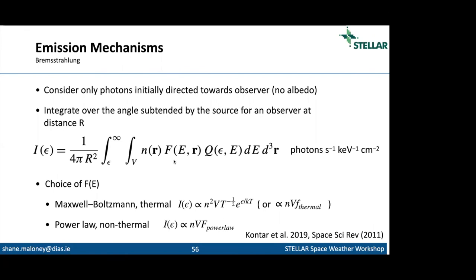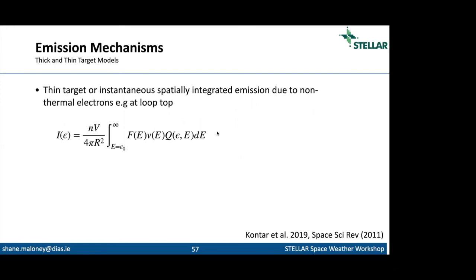One of the first approaches was the thin target model — taking this equation, integrating it spatially, and looking at a single instant in time. This gives an equation where, assuming an electron distribution, we can calculate the expected photon intensity. Crucially there's a dependence on N — the plasma density — taken inside the integral over the spatial domain. This is only really valid in certain conditions; it's good for loop top sources but not really valid for hard X-ray foot points. So they developed the thick target model.